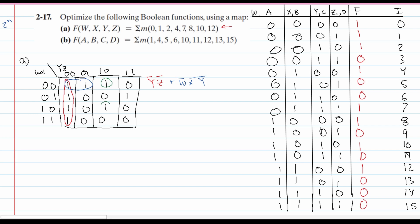The next thing we're going to look at is this 1 and this 1, paired with the 1 and 1 in the adjacent rows as well. So these four are all going to be together. Looking at the rows for W and X — if we look at both rows, X is both 0s, so we take the inverse and have X̄. Now looking at the columns, we have 00 here and 10 here. So we're not going to look at the Y. We have to look at the Z, and we take the inverse, giving us Z̄. So we have plus X̄ plus Z̄.